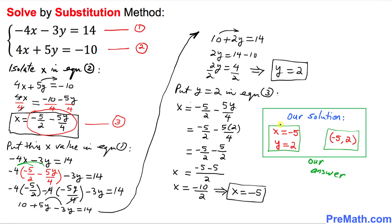Thus our solution is x equals negative 5 and y equals 2. You can also write it as the ordered pair negative 5 comma 2. And that is our answer.